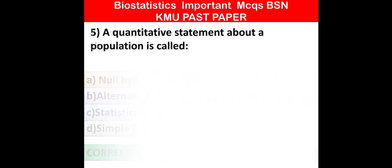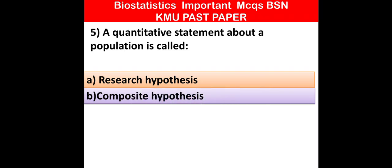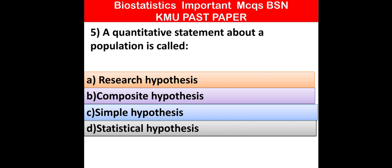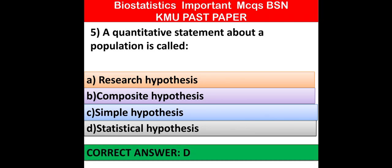MCQ number 5: A quantitative statement about the population is called — research hypothesis, composite hypothesis, sample hypothesis, or statistical hypothesis. A quantitative statement about the population — Option D is correct: statistical hypothesis.